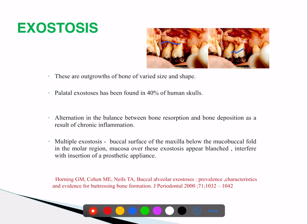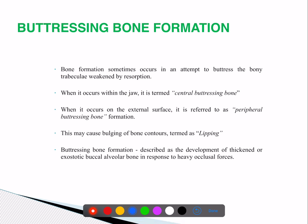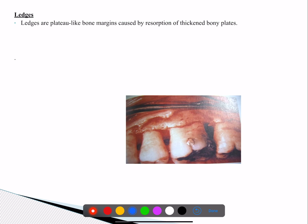Exostosis is a normal physiological variant. In fenestration, the marginal bone is intact and there is just a hole in the center. Buttressing bone formation: if within the jaw it is central buttressing bone formation; if towards the periphery it is peripheral buttressing, also called lipping. Reverse architecture means the periphery is lost and the center is filled with bone — the opposite of normal architecture. Ledges are plateau-like bony margins caused by resorption of thickened bony plates.